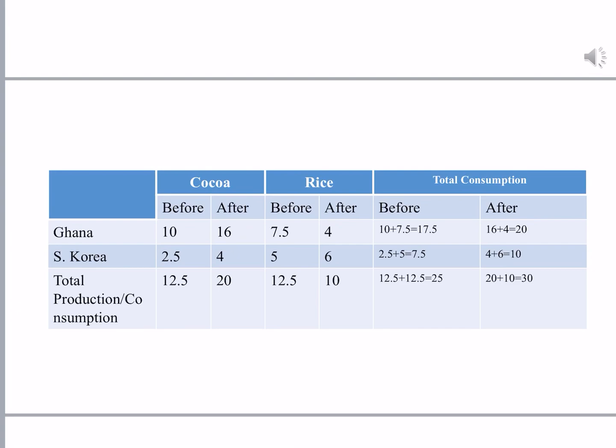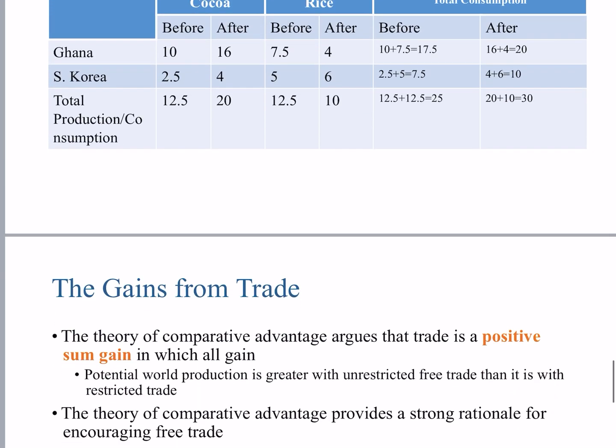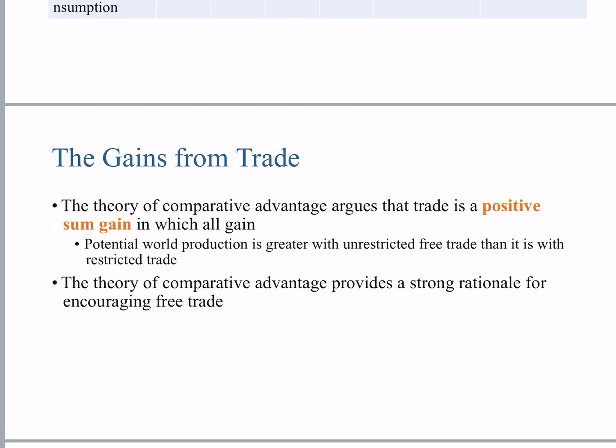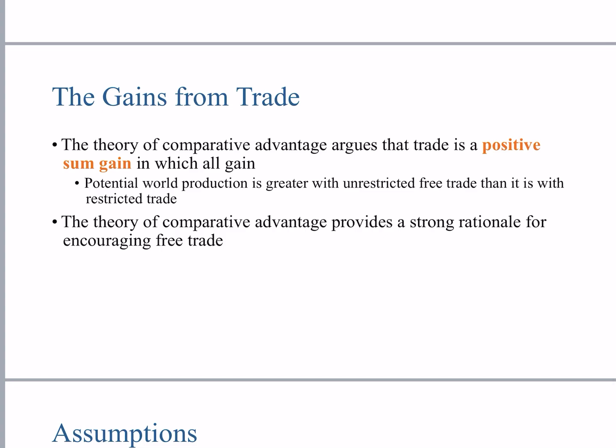Both countries benefit from trade even when there is no absolute advantage, as proved by David Ricardo with this simplified two-by-two model of two countries and two commodities. The theory of comparative advantage argues that trade is a positive sum game — the total will be more, and you are left with a positive net result.